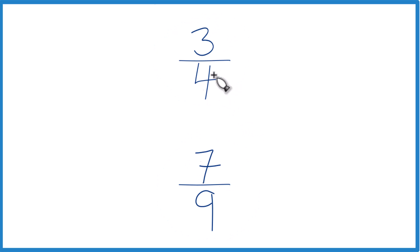So first off, you could divide 3 by 4, get a decimal, 7 by 9, get a decimal, and compare these fractions, see which one's larger. You could also find a common denominator.